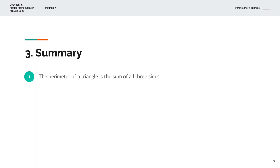To summarise, the perimeter of a triangle is the sum of all three sides, given by P equals A plus B plus C. Thank you very much for watching. This is Master Mathematics in Minutes.